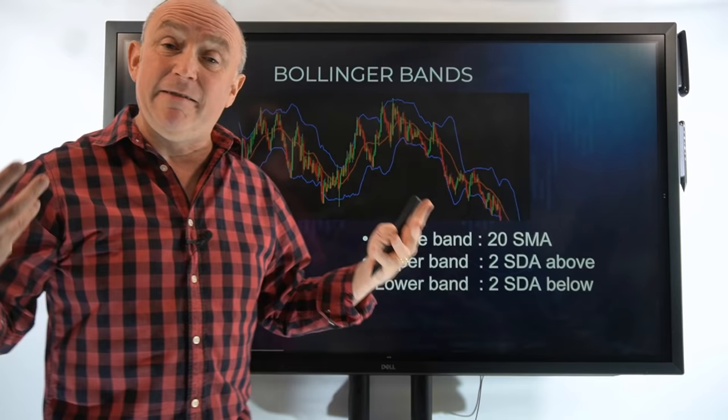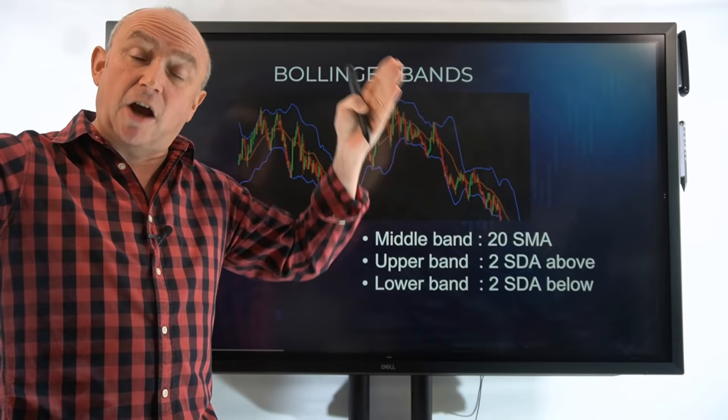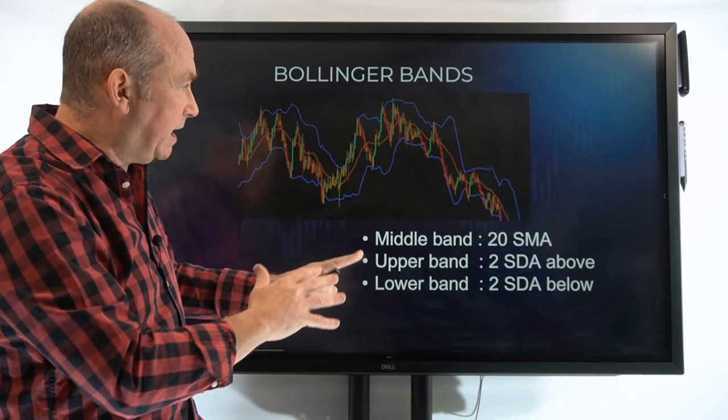The idea is basically that if prices move away from the middle band — if they divert away from the middle band — at some point they are going to reverse back in, revert to the mean, revert to that simple moving average. And it uses those standard deviations to give those outer bands. So, standard deviation — what is standard deviation?